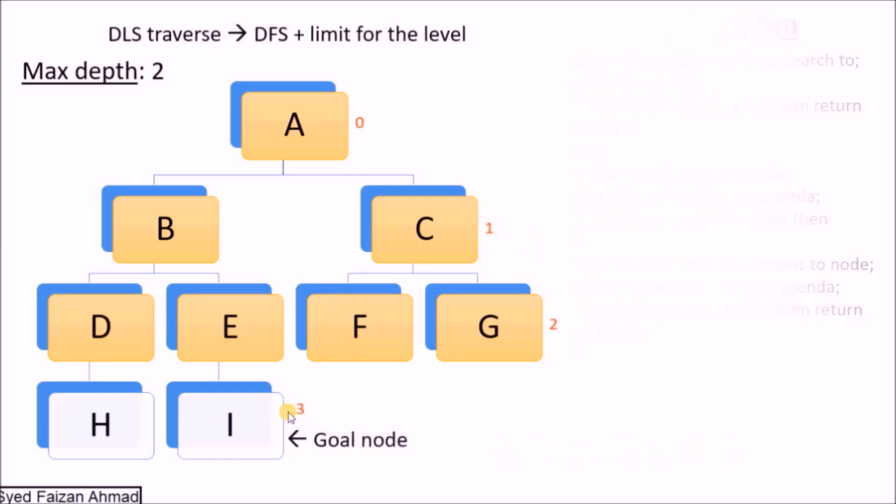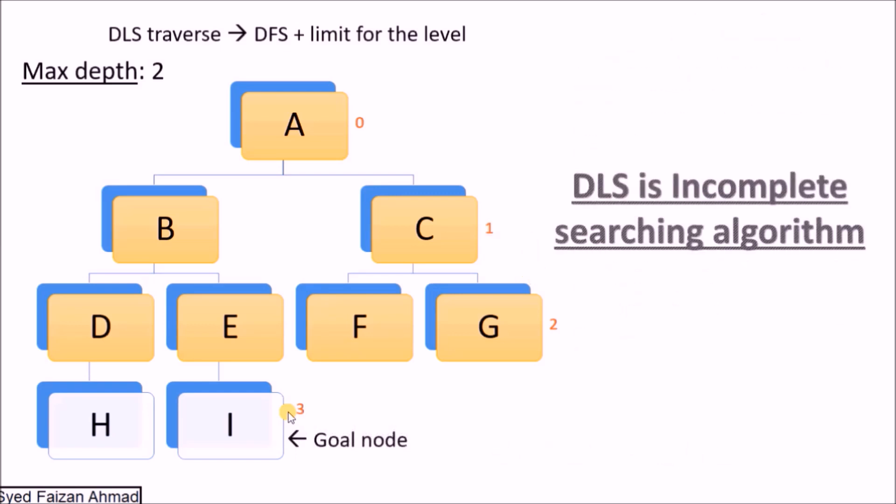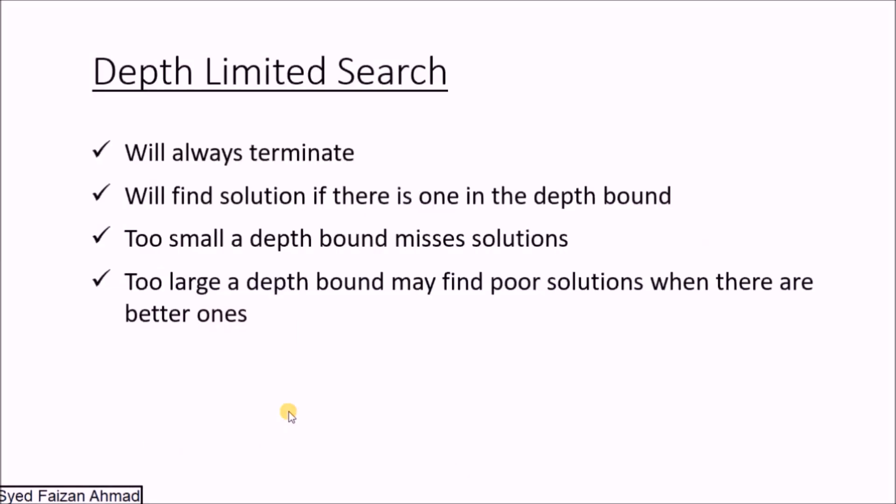It means we can say that DLS is an incomplete searching algorithm. Some properties of Depth Limited Search: it will always terminate, and will find a solution if there is one in the depth bound. We will get the solution if the goal node exists within the maximum depth we have set.